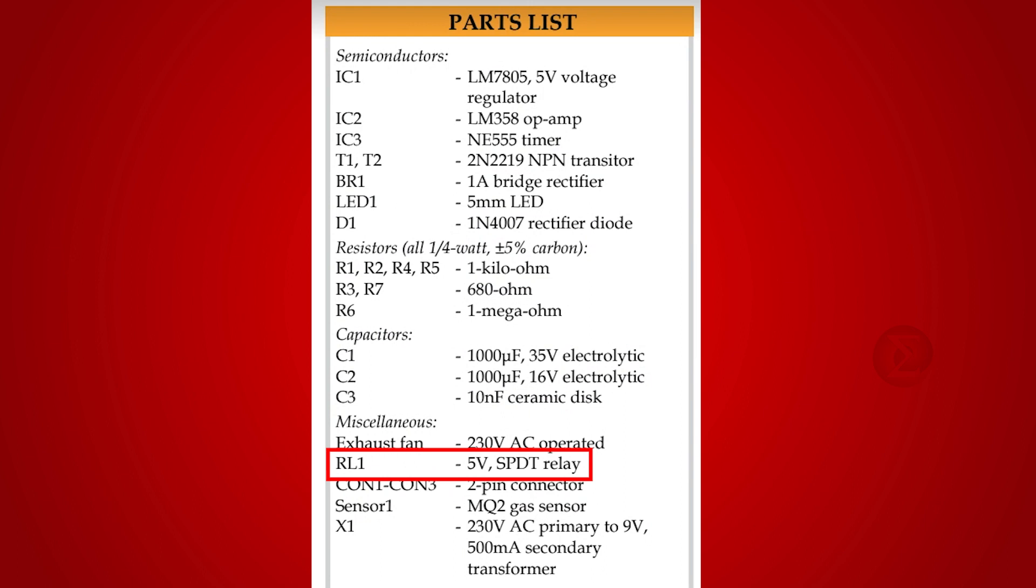Two transistors 2N2219 are used to drive the buzzer and relay. A 555 timer IC to set the time period for which the exhaust fan will remain on. You can adjust the time according to your needs.